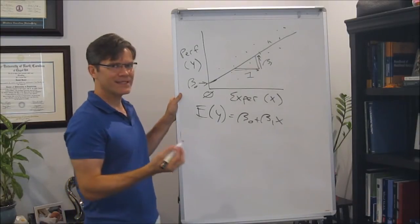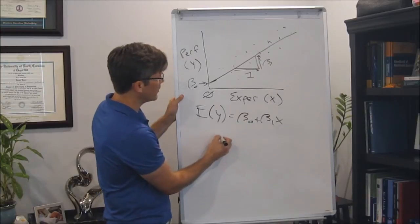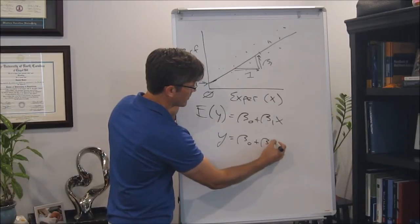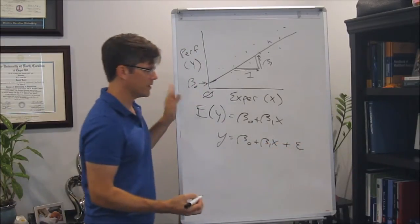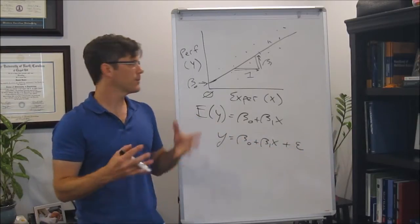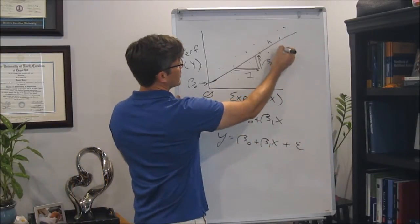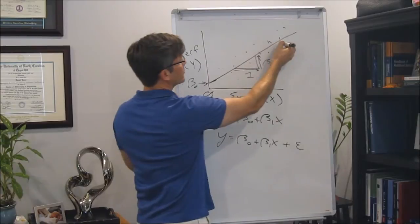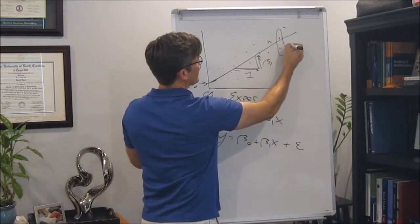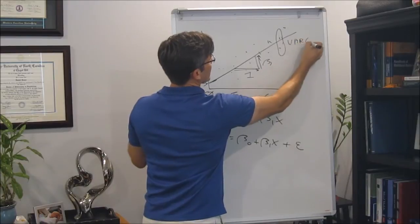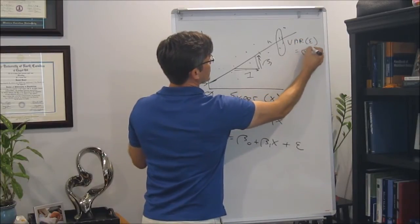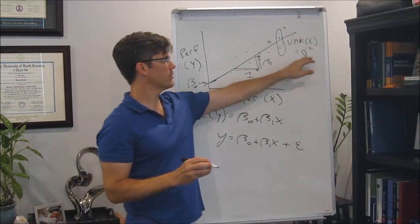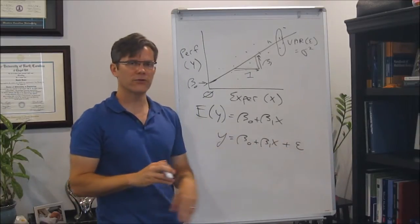We also talked about a third parameter in the regression model. The observed values of Y are equal to the expected values — beta naught plus beta 1 times X — plus that random element, our residual epsilon. That's the piece we cannot explain; each individual doesn't fall exactly on the line, but data points are dispersed around it. We characterize that dispersion with an additional parameter: the variance of those epsilons, sigma squared. So the variance in performance at any given level of experience is this third parameter, sigma squared.